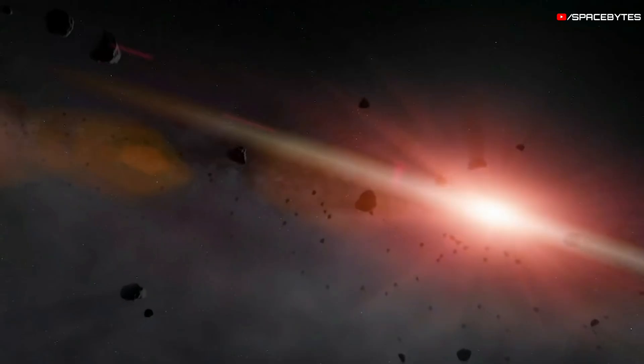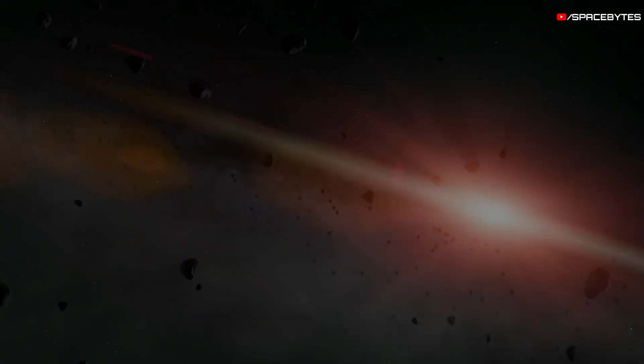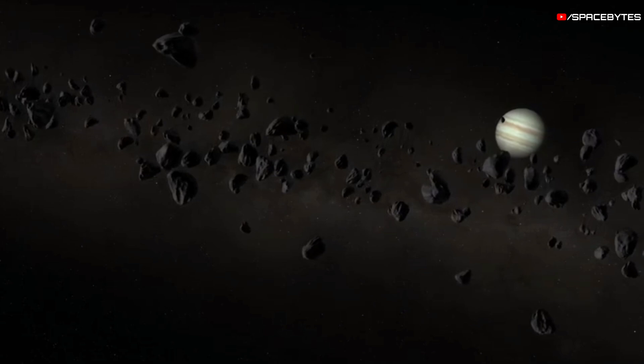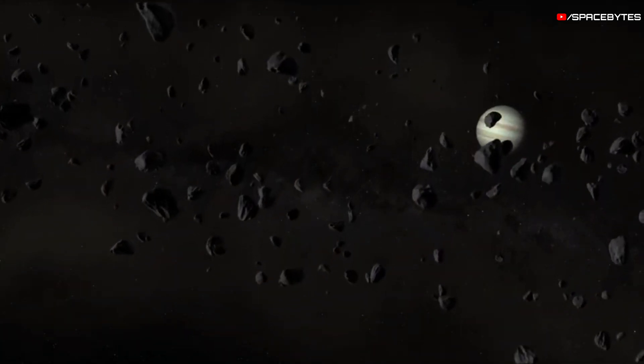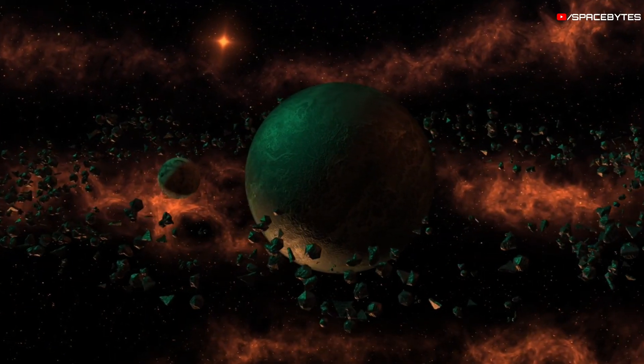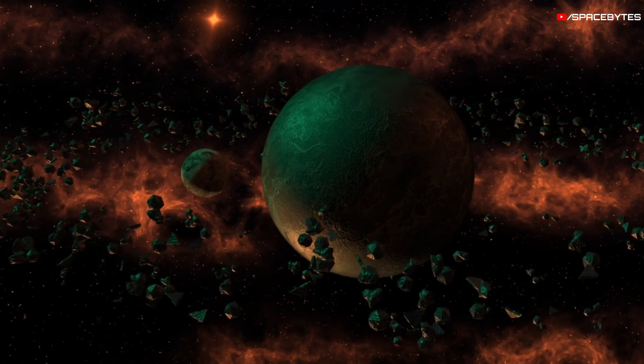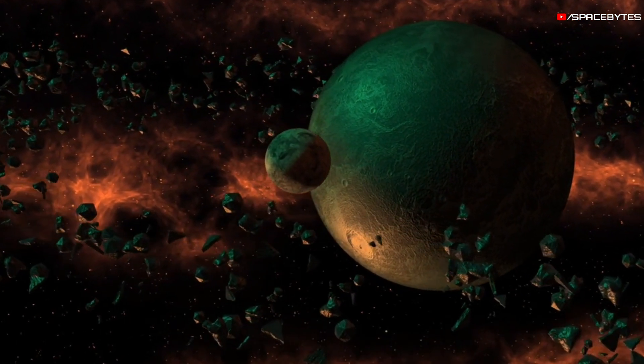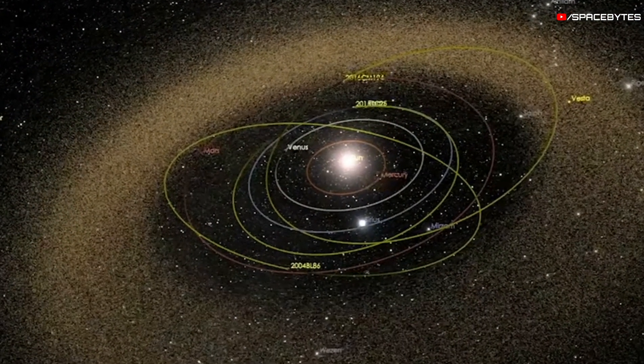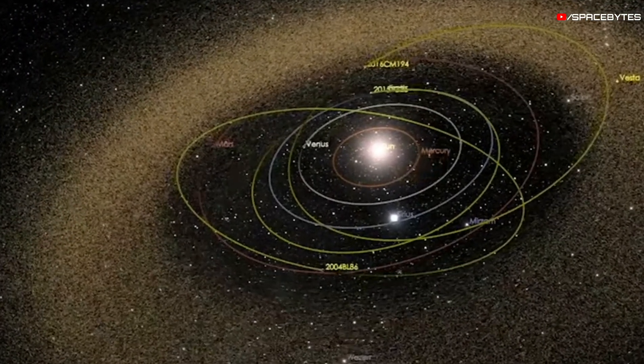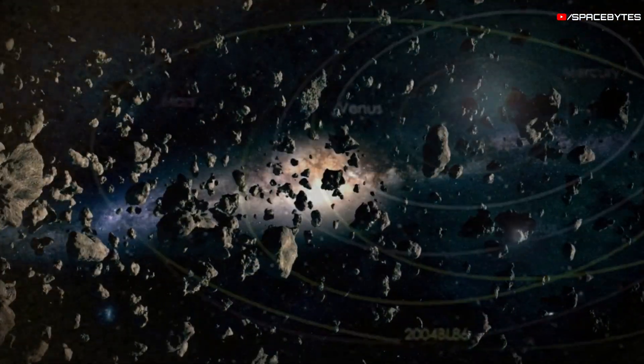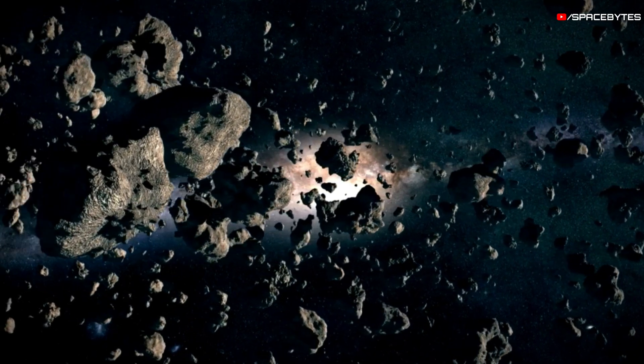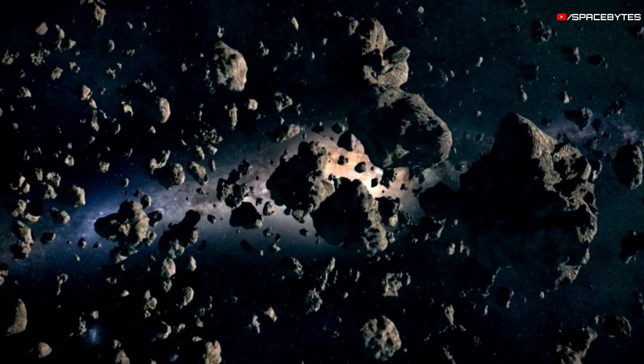Asteroids are found primarily in three areas of the solar system. The majority are located in a vast ring between the orbits of Mars and Jupiter. This main asteroid belt contains about 200 asteroids having diameters greater than 60 miles, between 1.2 and 2 million asteroids larger than 3,280 feet in diameter, as well as millions of smaller ones.